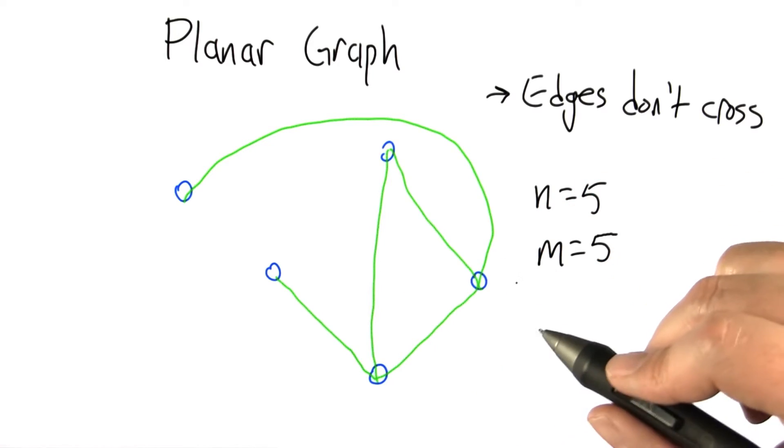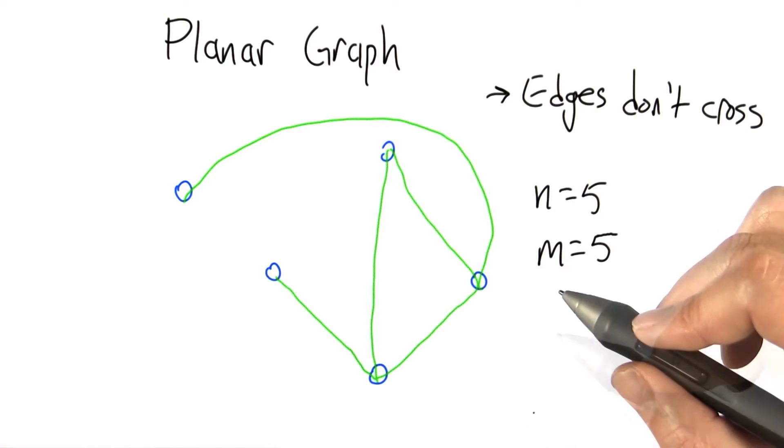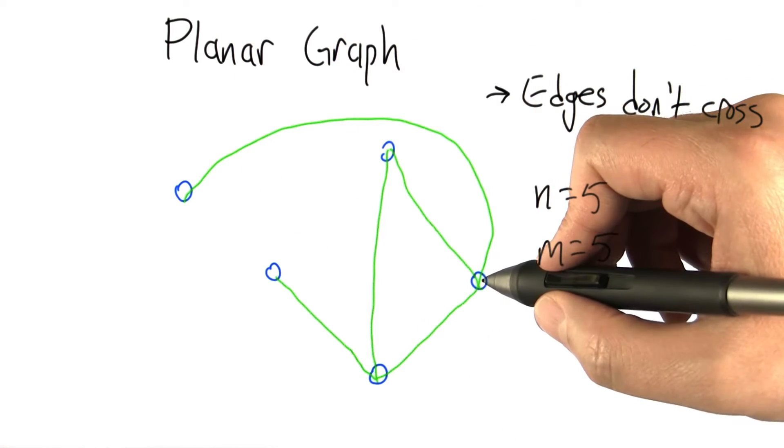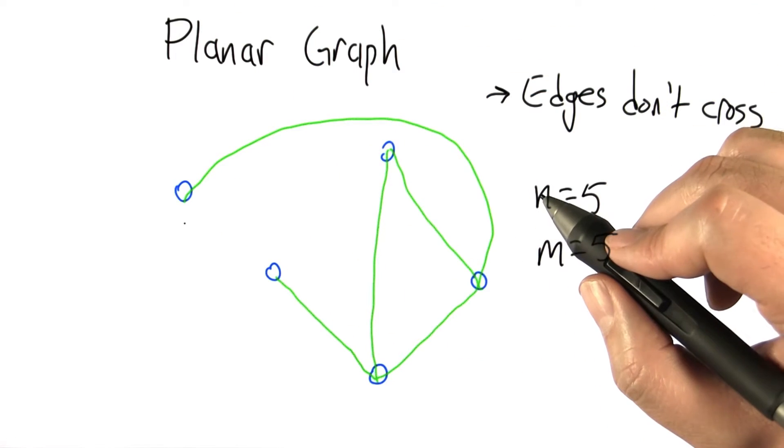So here's an example of a planar graph. We've got 1, 2, 3, 4, 5 nodes and 1, 2, 3, 4, 5 edges. And you see the way I drew it here, this node here and this node needed to be connected and I just drew a nice little curvy line around without crossing anything else. So this is a planar graph.